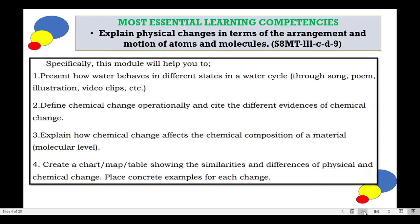For our most essential learning competencies, we have to explain physical changes in terms of the arrangement and motion of atoms and molecules. The objectives are: 1. Present how water behaves in different states in a water cycle. 2. Define chemical change operationally and cite the different evidences of chemical change. 3. Explain how chemical change affects the chemical composition of a material. 4. Create a chart, map, or table showing the similarities and differences of physical and chemical change.